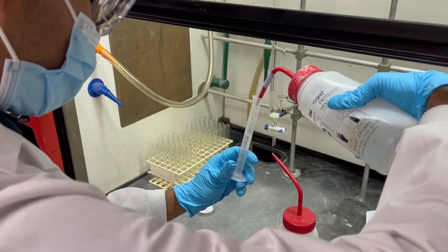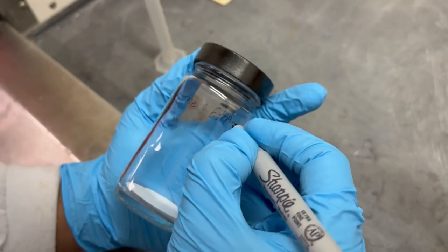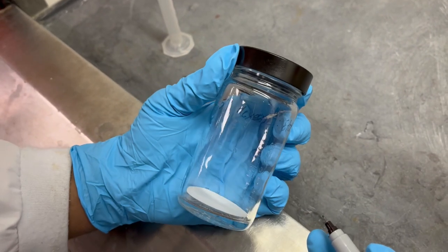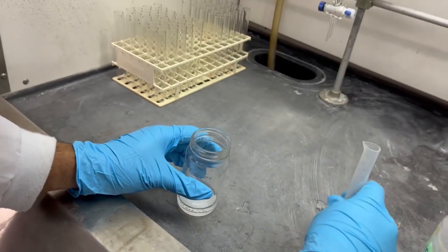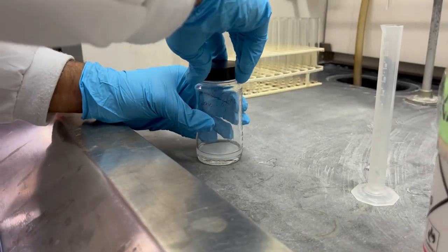Next, a thin layer chromatography or TLC chamber with 5% hexane to ethyl acetate is prepared to develop plates in order to monitor and determine what product is eluding from the column.